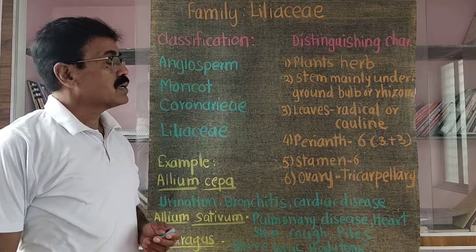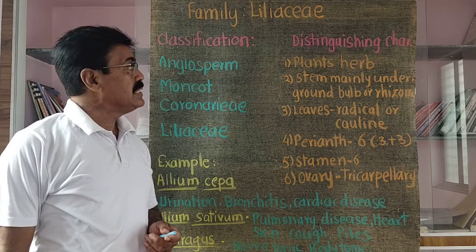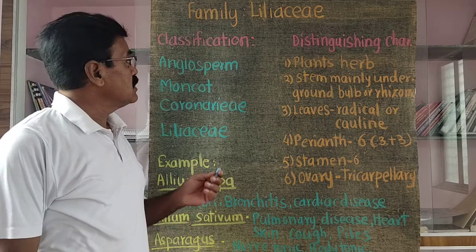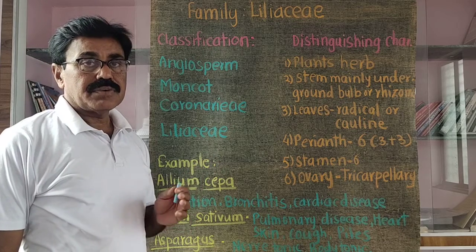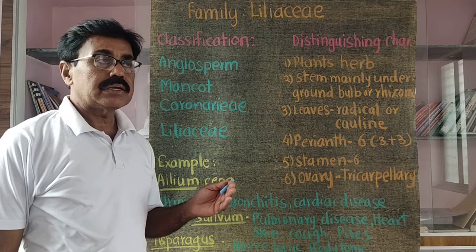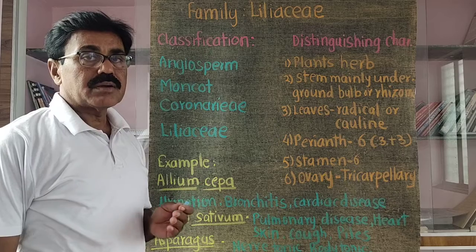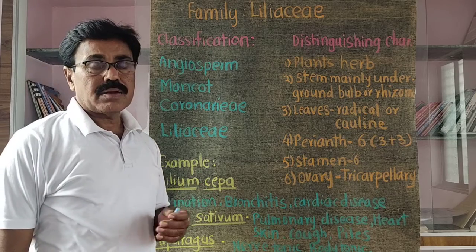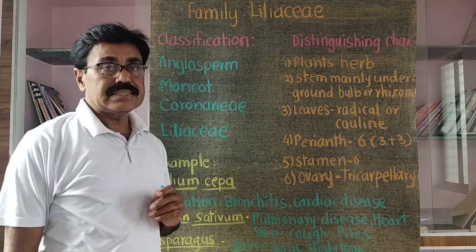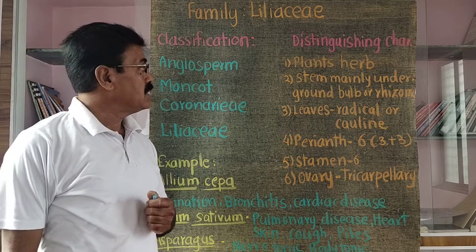In this video, we are concerned with family Liliaceae, which is a monocot family. The first three families — Caesalpiniaceae, Solanaceae, and Noctaginaceae — are dicot families. Only one family in your syllabus, family Liliaceae, is a monocot family, belonging to class Monocotyledoneae according to Bentham and Hooker's classification.